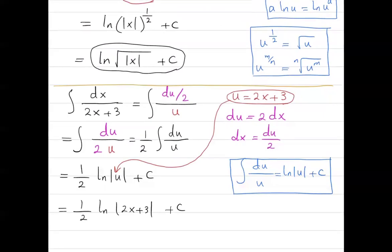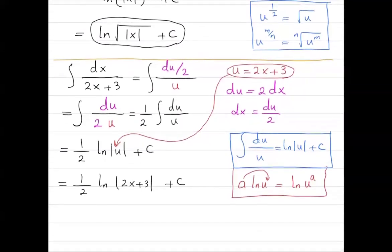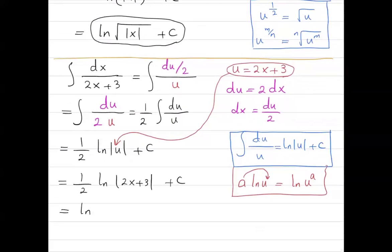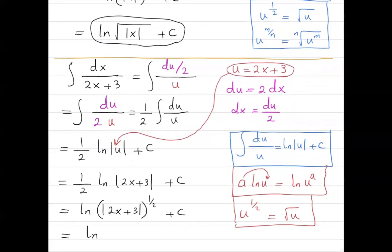Remember from algebra that if you have a times ln of u, the a acts like an exponent, giving you ln of u to the power a. So we can simplify further into ln of the absolute value of 2x plus 3 to the power one-half plus C. Since u to the power one-half is the square root of u, this can be written as ln of the square root of the absolute value of 2x plus 3 plus C.